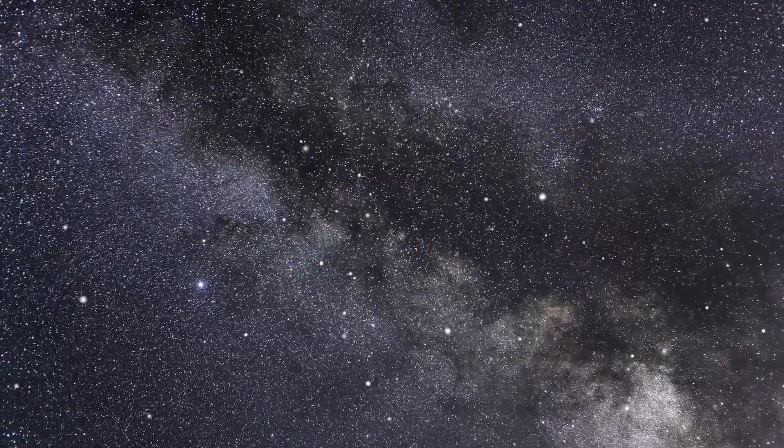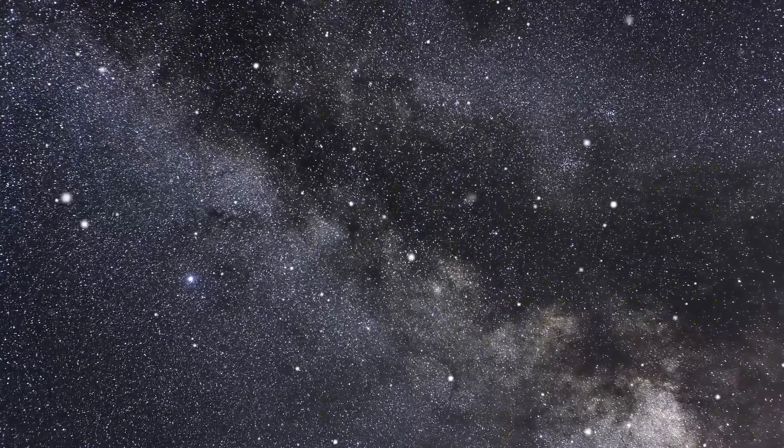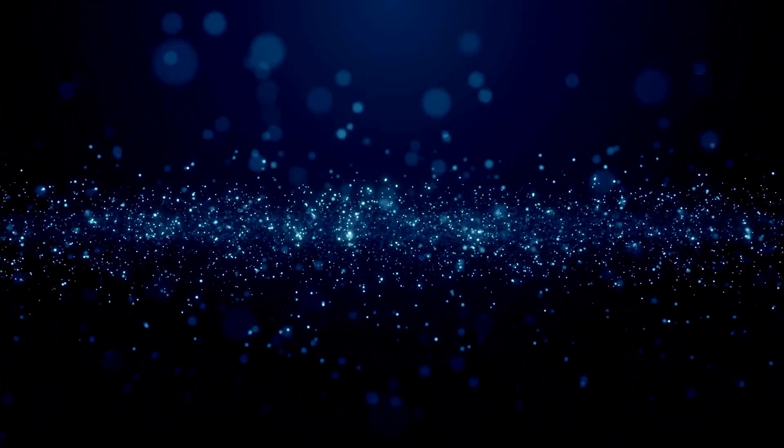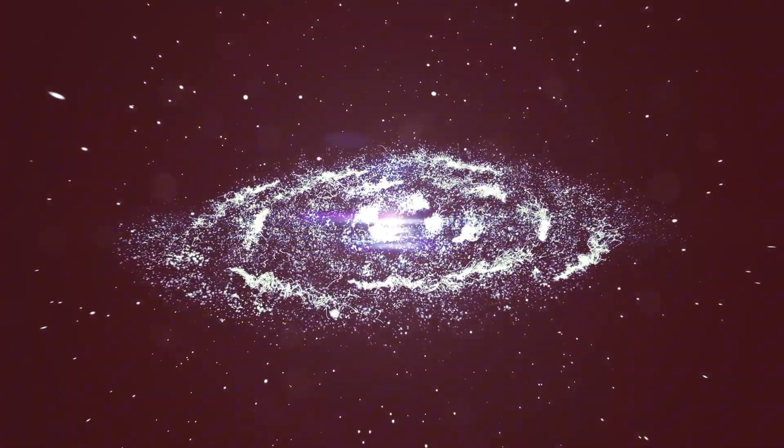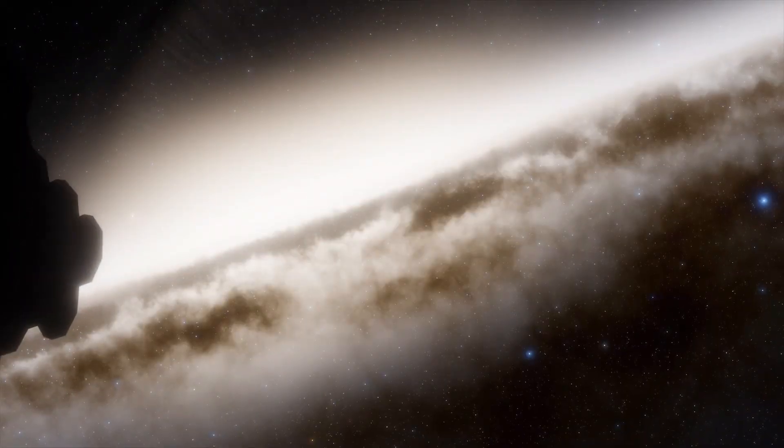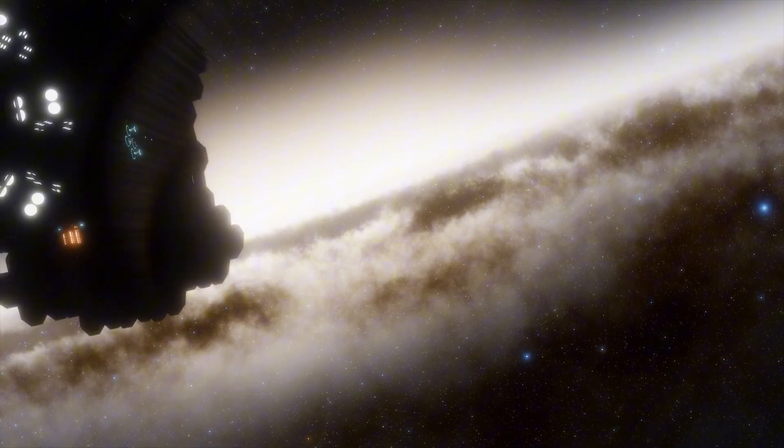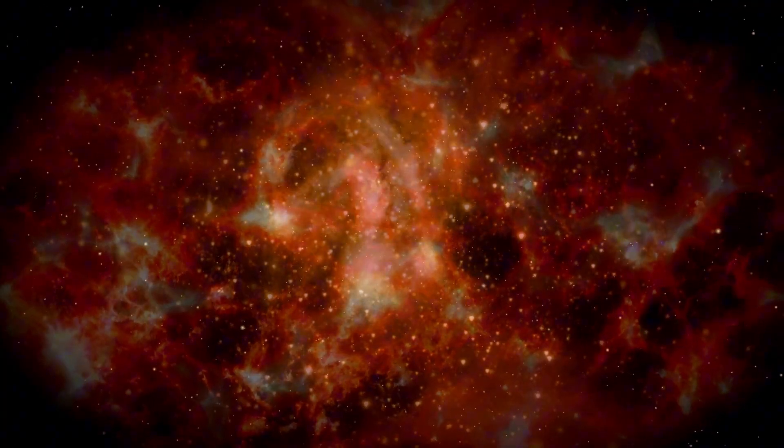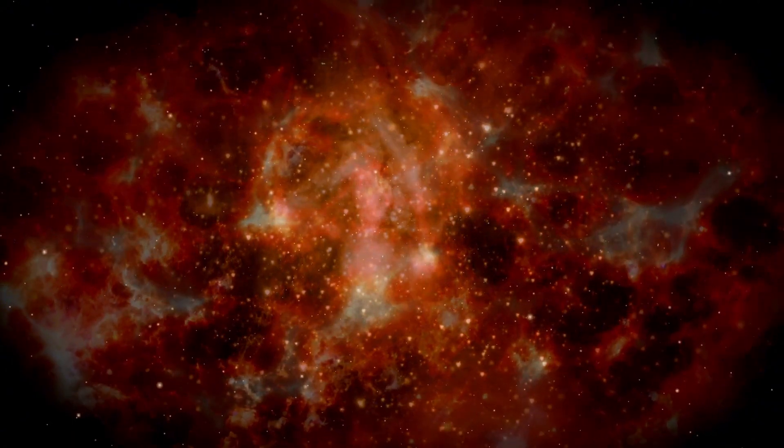Although Betelgeuse's supernova is not projected to directly threaten life on Earth, there could be certain atmospheric impacts. The explosion would emit a surge of ultraviolet radiation, potentially leading to a temporary reduction in the ozone layer. However, research indicates any resulting ozone depletion would likely be minor and brief, with limited environmental implications. Immediately after the explosion, we would detect weightless particles called neutrinos, which are harmless to us. The star would rapidly become brighter, reaching a luminosity akin to the full moon's radiance within one or two weeks. Betelgeuse's brilliance would then wane over several months, gracing our daylight hours for about six months to a full year. As night descends, it would continue to be a visible spectacle for another one to two years before bidding us a final farewell.